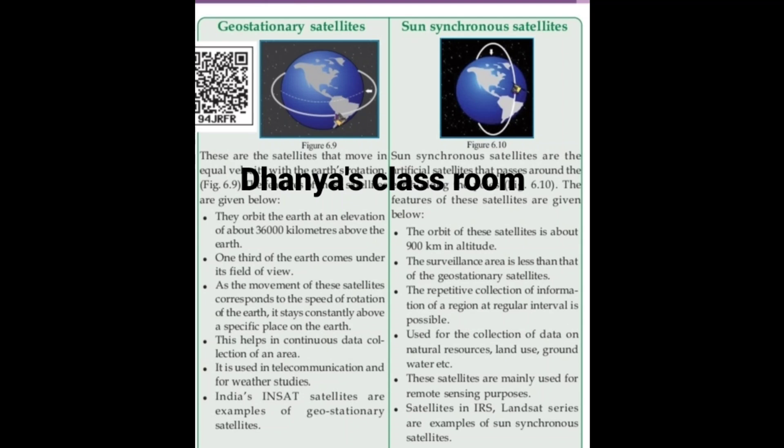One third of the Earth always comes under its field of view. As the movement of this satellite corresponds to the speed of rotation of the Earth, it stays constantly above a specific place on the Earth.